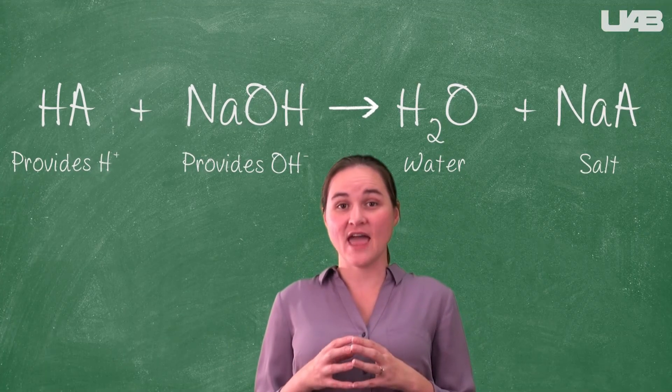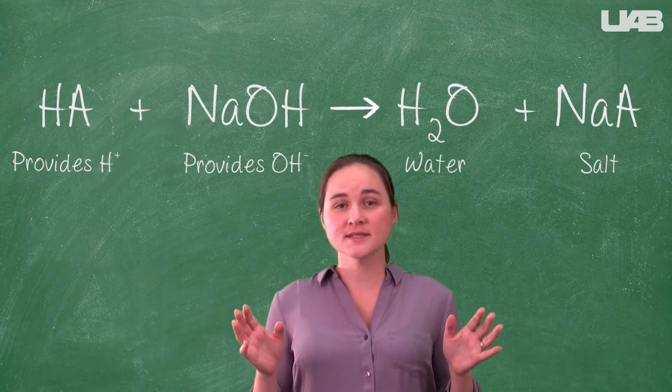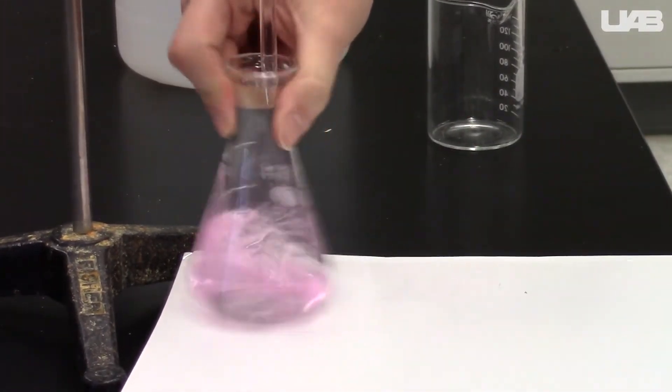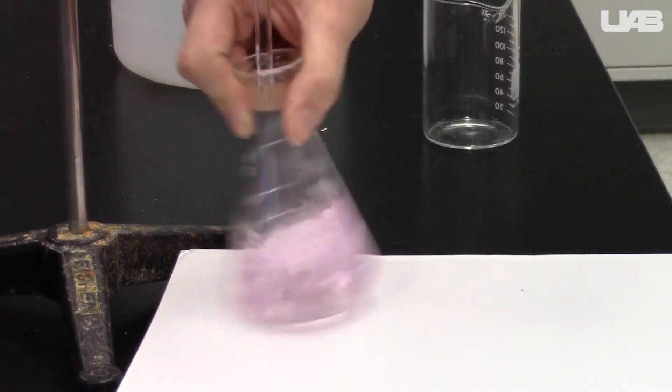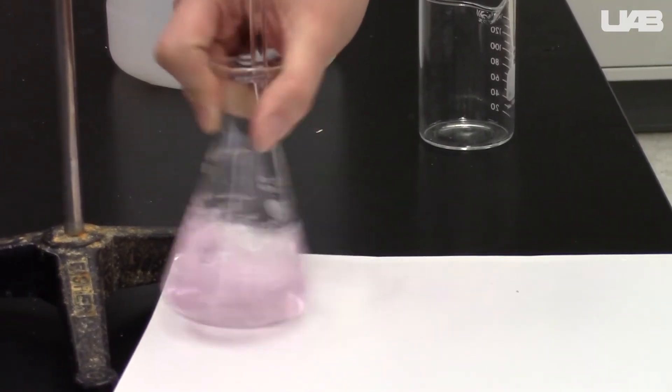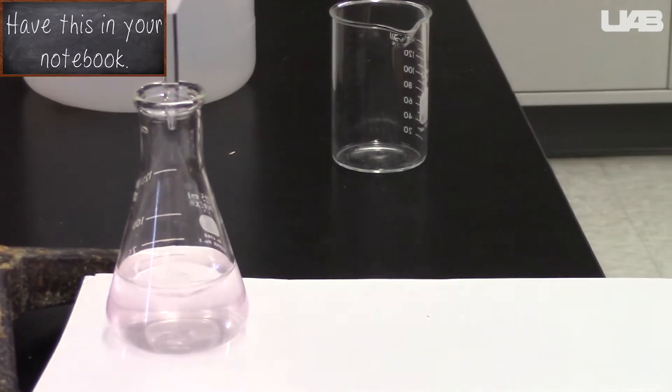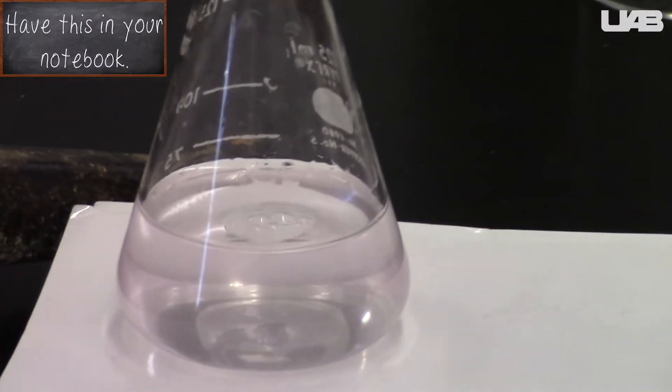If we know the identity of everything in the solution, we can detect when we have the salt and water. In this lab, we will detect the equivalence point by observing the color change of an indicator, which will change color at or very near the equivalence point. So when we first see the color change, we know that the amount of base is equivalent to the amount of acid.